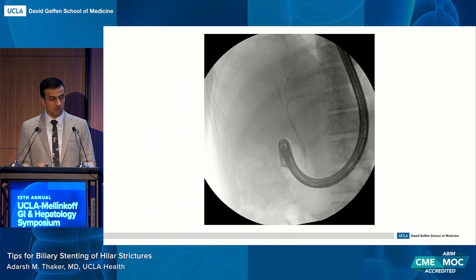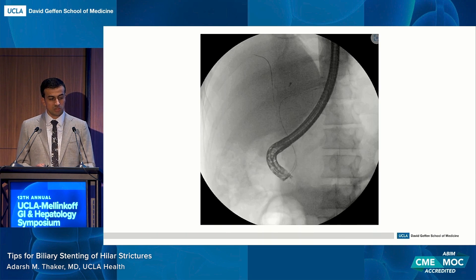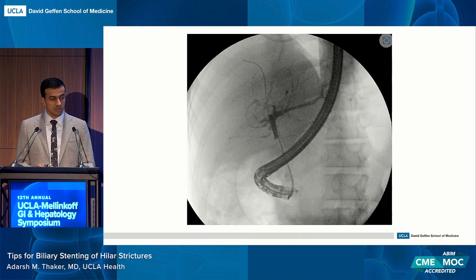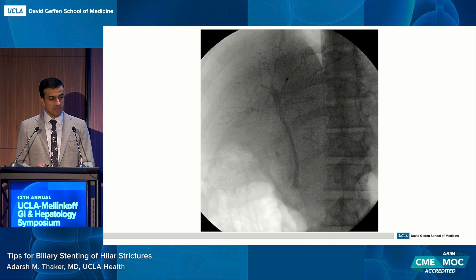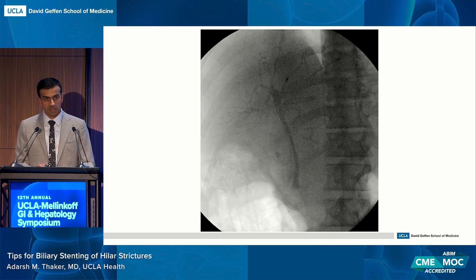A recent case example: a patient doing very well with plastic stents — well-positioned, bilirubin normal, receiving chemotherapy — but a goals-of-care discussion led to switching to metal stents. We performed selective duct cannulation, cholangiogram on either side confirming good targets, and then placed side-by-side metal stents that landed all the way across the hilum.